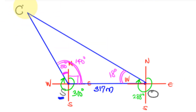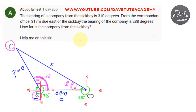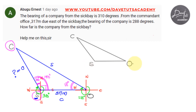This is the diagram we can use to solve our question. We know one side; we are looking for the distance between the company and the Seat Bay. We label appropriately: O is the commandant's office, S is the Seat Bay, C is the company. The side facing O is small o — the distance we are looking for. The side facing S is small s, and the side facing C is small c, which was given as 317 meters. If we draw the triangle neatly, we have vertices C, S, and O, with 140 degrees at S, 18 degrees at O, and we are looking for side o, with c equal to 317 meters.